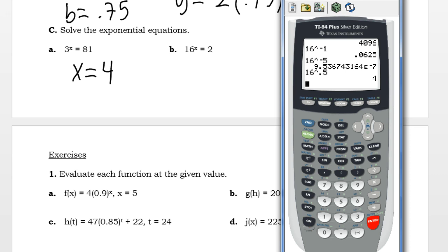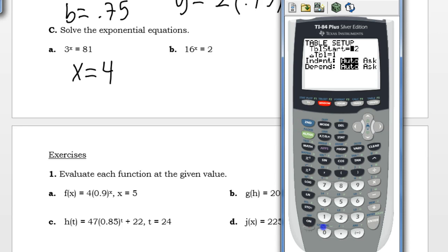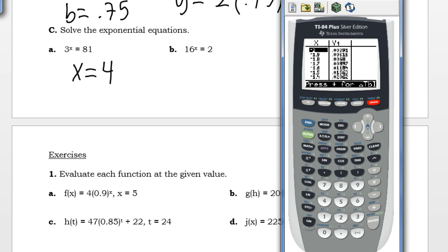So guess and check can get kind of tedious if we don't want to go with that method. I like the table. And again, I'm just looking for 2, but this doesn't really help me, because I figured out it was a decimal, and my table's only going to be whole numbers. If you know how to work your table setup, we can go by different quantities. If you don't really know how to work your table setup, I would probably keep going with guess and check.